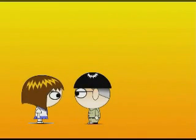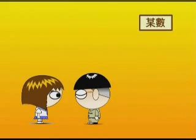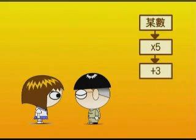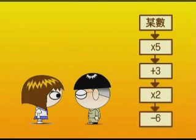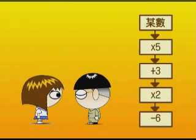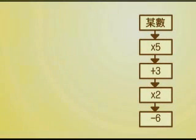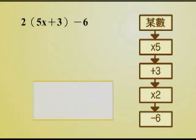还记得小恩的猜心数吗？小恩对小哲说，你心里想一个数，将此数乘以5，再加3，再乘以2，再减去6，然后将结果告诉我，我就知道你心里想到的数是什么。小恩把心里想的数当X，将此数乘以5，再加3，再乘以2，最后再减去6，就得到2括号5X加3减6。